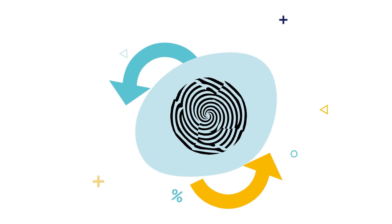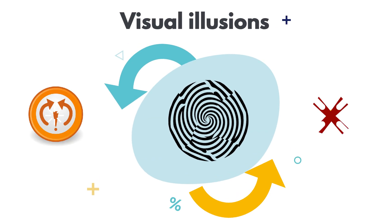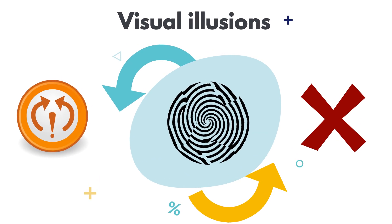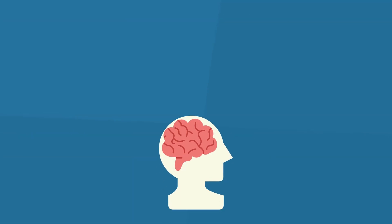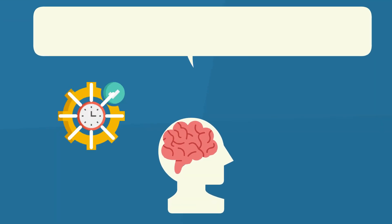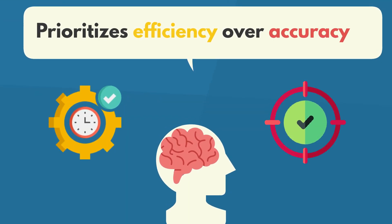They help explain phenomena like visual illusions, where what we see contradicts reality, showcasing how the brain sometimes prioritizes efficiency over accuracy in perception.